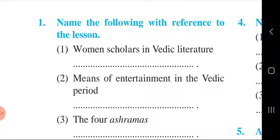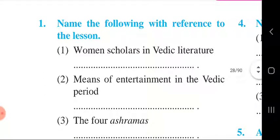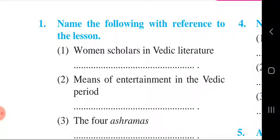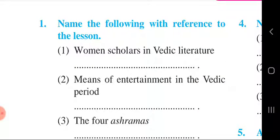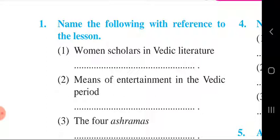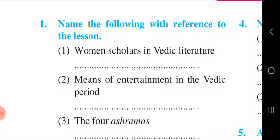Second: means of entertainment in the Vedic period. Means of entertainment during the Vedic period were singing, playing musical instruments, dance and board games. Third: the four ashramas — Brahmacharya ashram, Gryastha ashram, Vanaprastha ashram, Sanyas ashram.